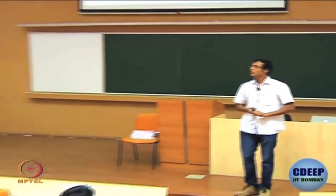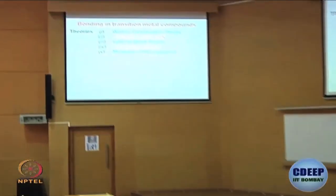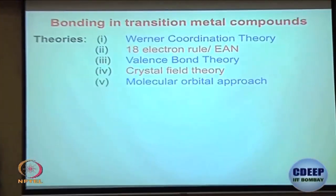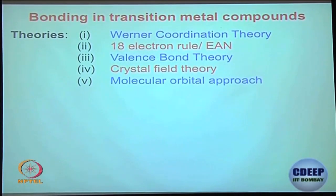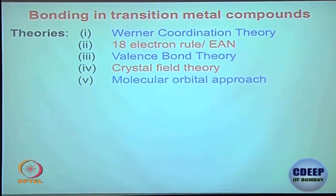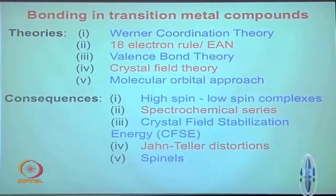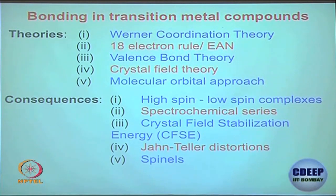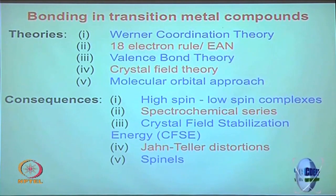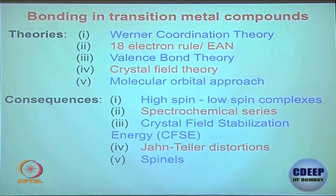We will be particularly focusing on these theories: Werner coordination theory, 18 electron rule, valence bond theory, crystal field theory, and not too much on the molecular orbital approach. We are also expected to learn high spin and low spin complexes, spectrochemical series, crystal field stabilization energy, Jahn-Teller distortion, and finally about spinels. These are roughly the topics I am going to cover today.